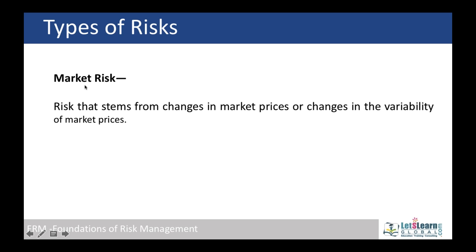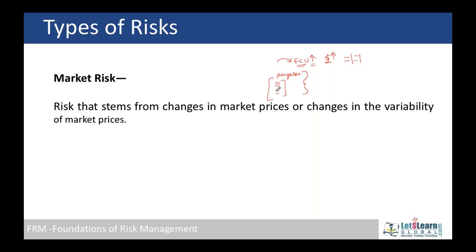For example, in Forex — if we deal with foreign currency units and have payables in foreign currency, a strengthening of that foreign currency affects all importers in our country. Dollar price increases, government policies, regulations in foreign countries, and weather conditions will all have an impact on all businesses. This type of risk is called market risk because it is applicable to everyone; it is also known as systematic risk.